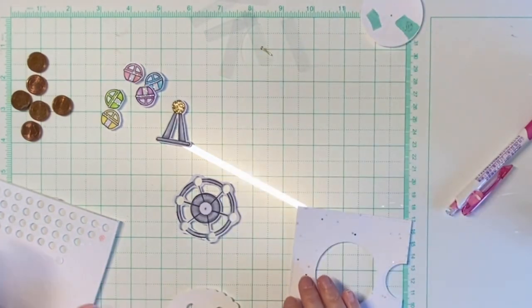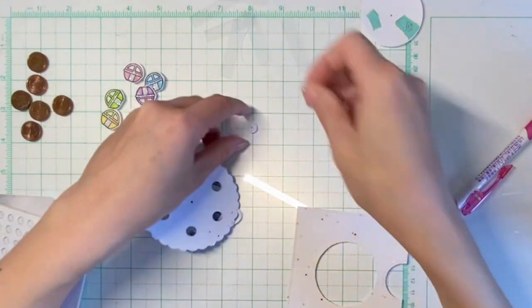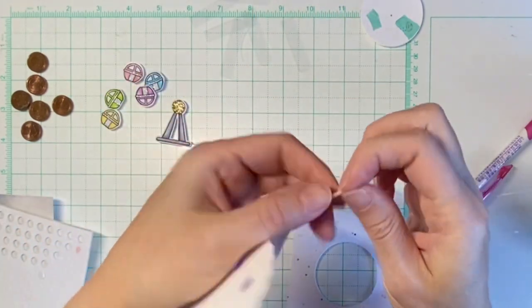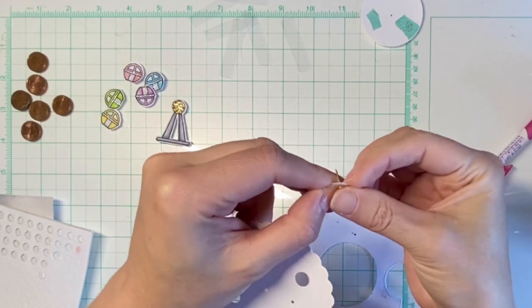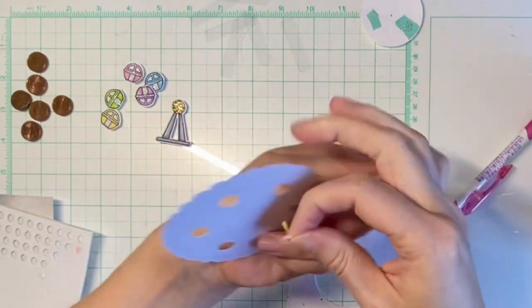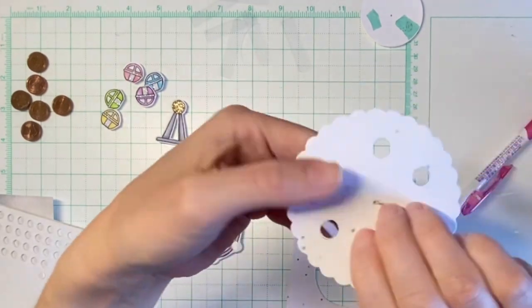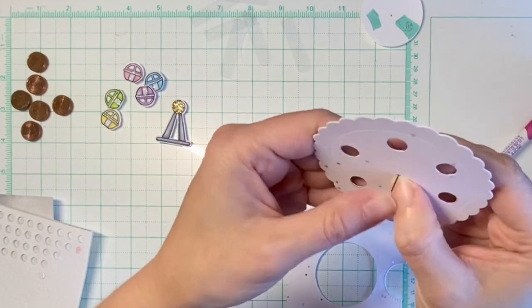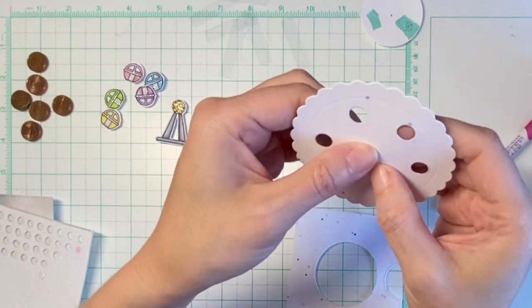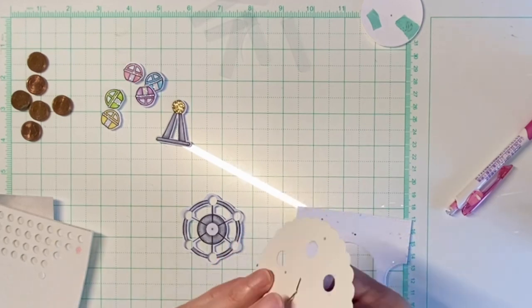The next step is to attach the tiny circle to the reveal wheel with a brad, so I feed it through the tiny circle and then through the reveal wheel. But you need to also feed it through the ferris wheel. I forgot that at this point and had to fiddle around with it later.